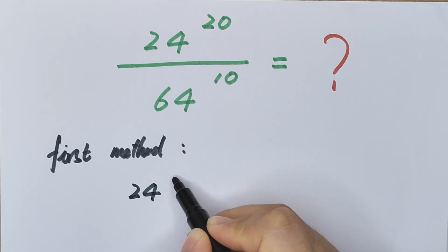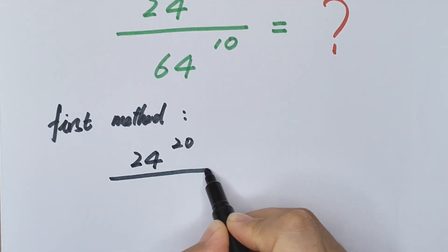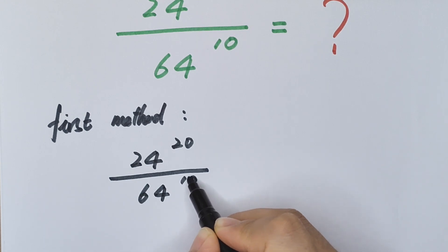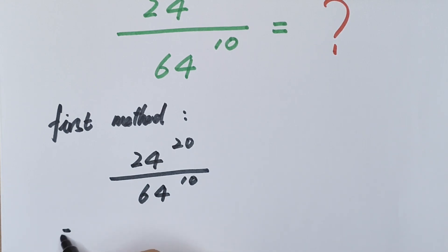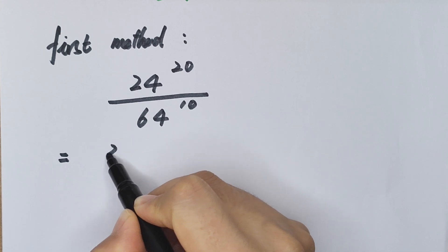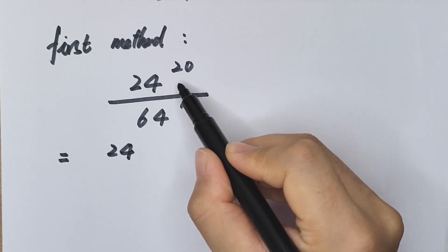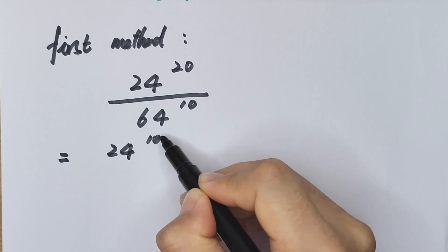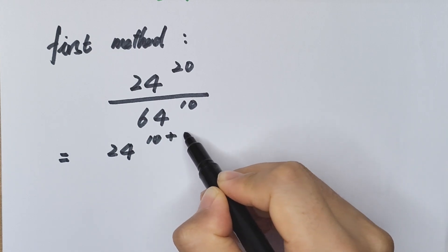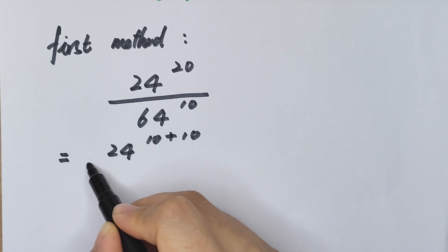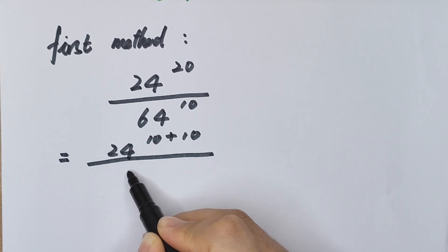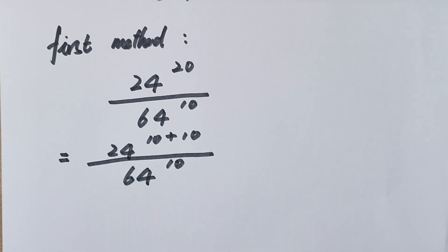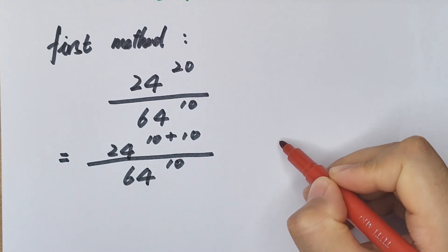Method 1: 24 to the power of 20 divided by 64 to the power of 10. We rewrite 20 as 10 plus 10, so this becomes 24 to the power of 10 plus 10, divided by 64 to the power of 10. Now we apply the formula.